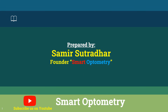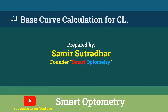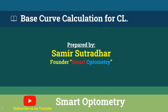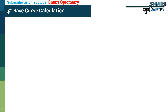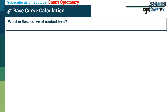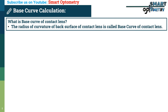Today I will discuss how to calculate the initial base curve of a contact lens. First, let's understand what the base curve of a contact lens is. The radius of curvature of the back surface of a contact lens is called the base curve of the contact lens.